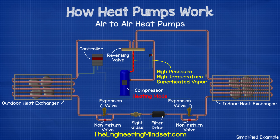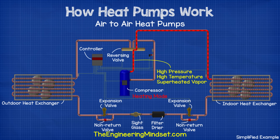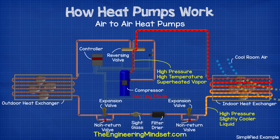In heating mode, the refrigerant leaves the compressor as a high pressure, high temperature vapor and passes to the reversing valve. The reversing valve is positioned in heating mode, so the refrigerant passes through this and heads to the indoor unit. Cool air is then blown over the indoor unit's heat exchanger to remove some of the thermal energy and provide heating to the room. As heat is removed, the refrigerant will condense into a liquid. Having given up some of its energy, the refrigerant leaves as a high pressure, slightly cooler liquid.